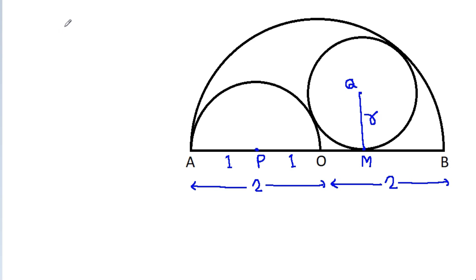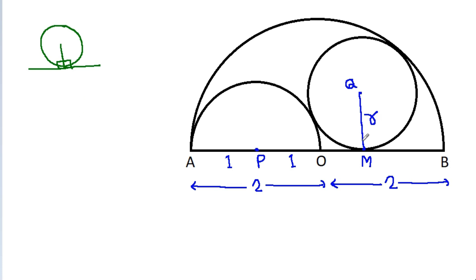In any circle, the radius and tangent are perpendicular to each other. So this angle will be 90 degrees.